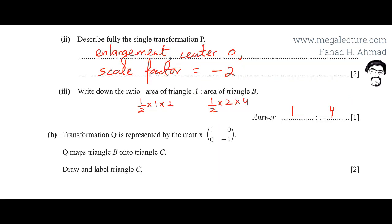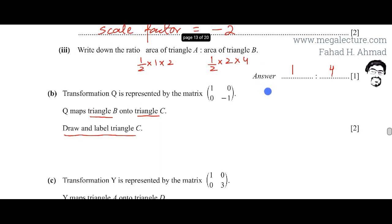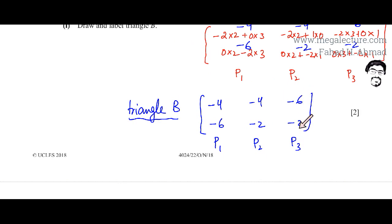Moving to part B: there's another transformation Q represented by the matrix with first row 1 and 0, and second row 0 and minus 1. Q maps Triangle B onto Triangle C. We need to draw and label Triangle C. In a similar way, I need to multiply this transformation matrix by the points on Triangle B.